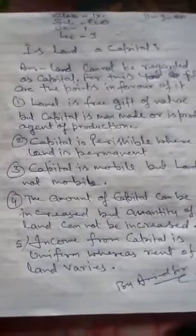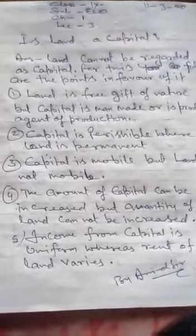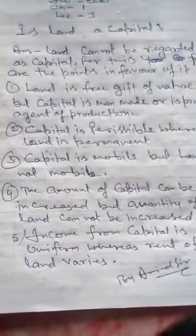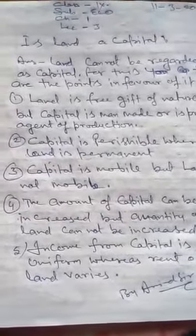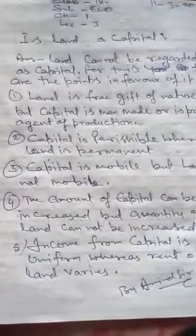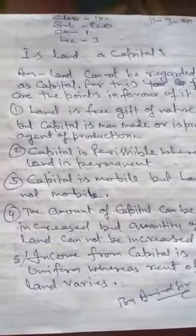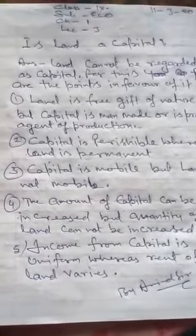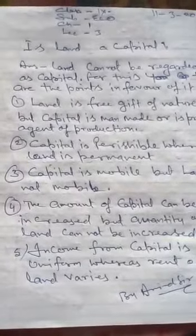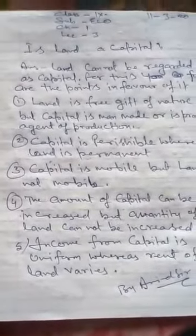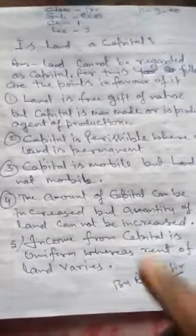The second point is: capital is perishable, whereas land is permanent. Capital can be destroyed — for example, if you have opened a shop and unfortunately a fire breaks out, everything in the shop gets destroyed and you lose your capital. But land is permanent and cannot be destroyed; land is not perishable.